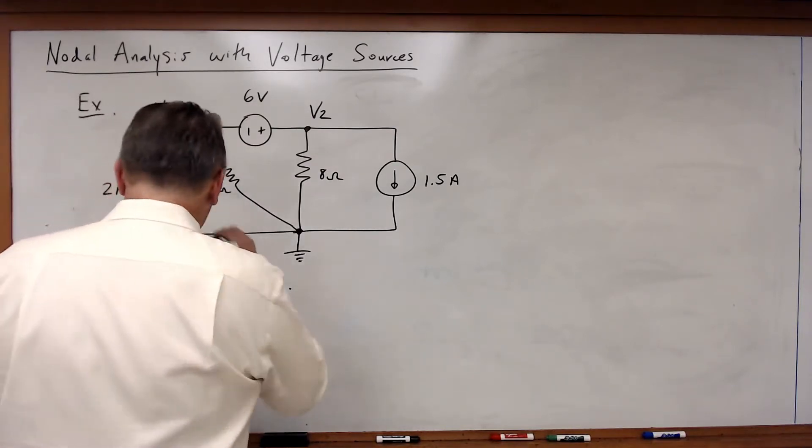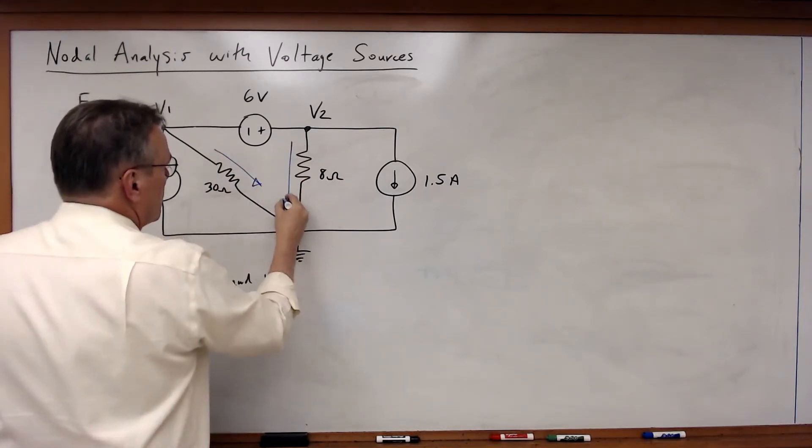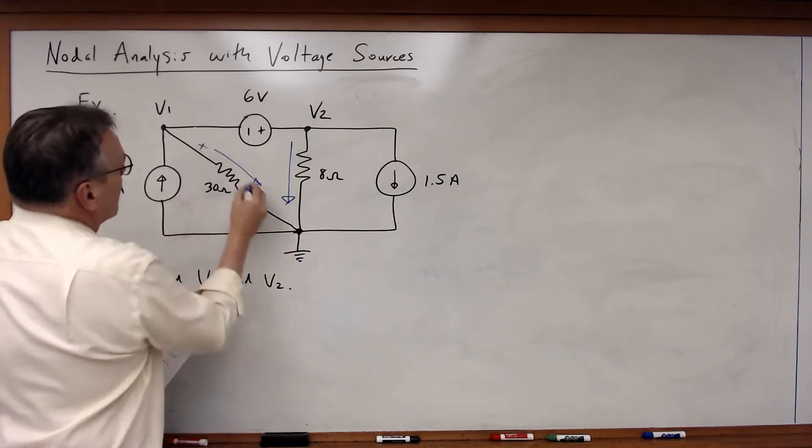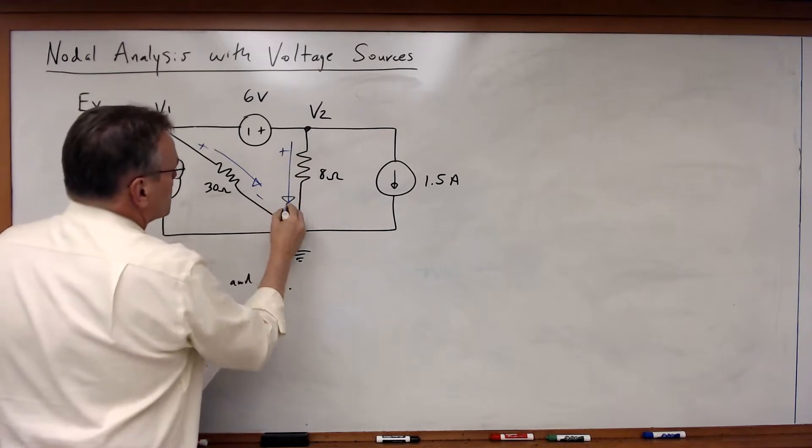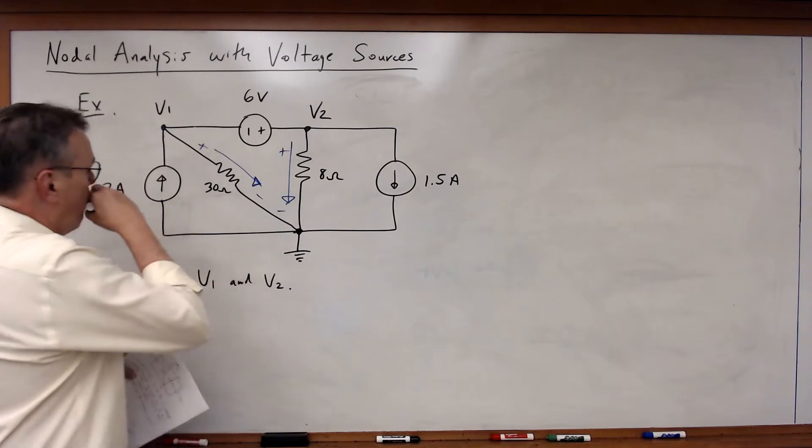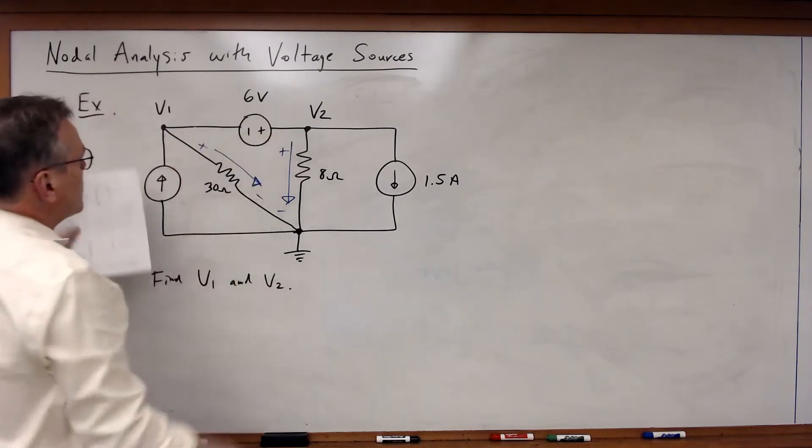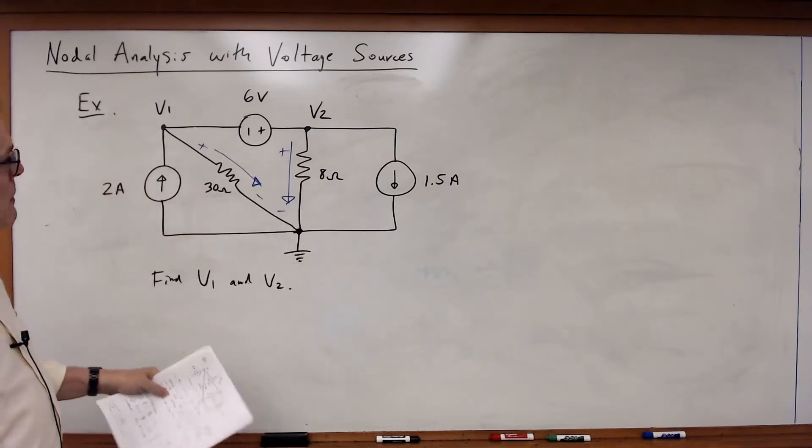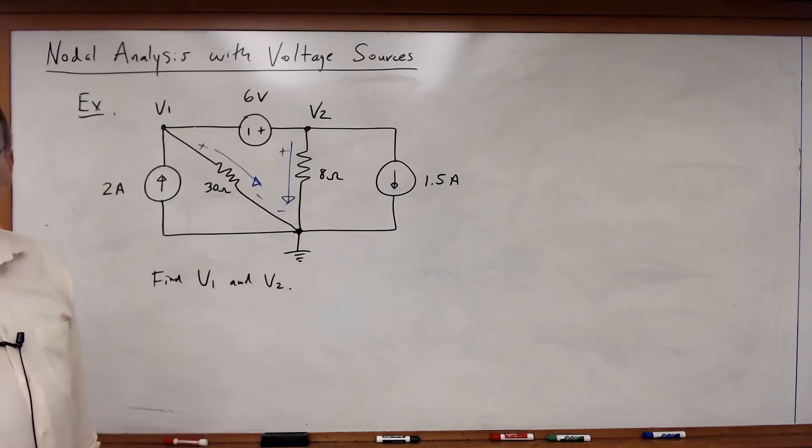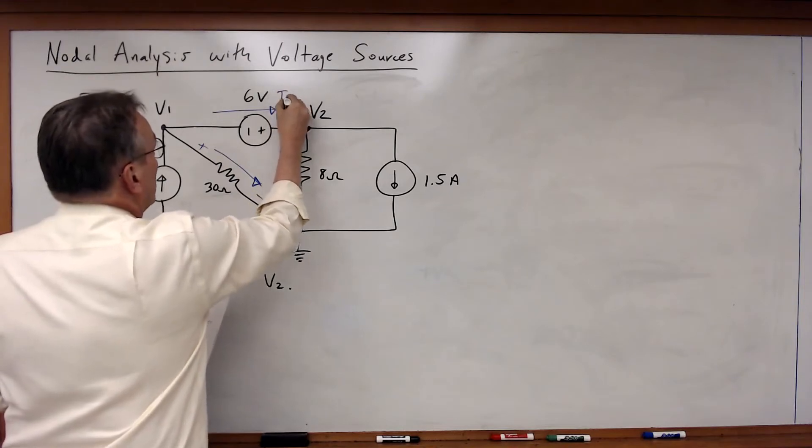So in this case I'm going to pick this current direction through the 30 ohm resistor. That current direction through the 8 ohm resistor. Pick those voltage drops according to the passive sign convention across those resistors. And now I'm going to write a KCL equation for V1 and V2.